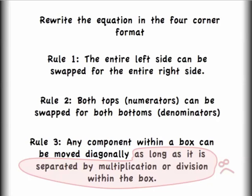For a review: one can rewrite the equation in the four-corner format, and from there use the three rules. Rule one says that the entire left-hand side can be swapped for the entire right-hand side. Rule two says that you can flip from top to bottom both sides of the equation and you haven't changed anything. Rule three says that any component within a box can be moved diagonally as long as it is separated by multiplication or division within the box. What that really means is that if I need to move something that has a plus or minus sign within it, I have to move the whole chunk — so if I needed to move something that had an A plus B, I would have to move the entire quantity A plus B and keep it in parentheses. Good luck!